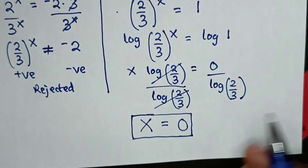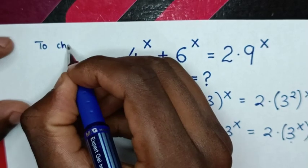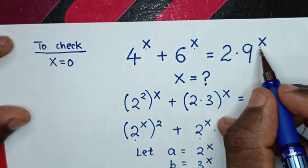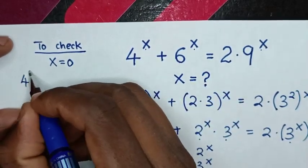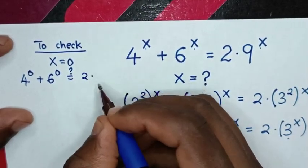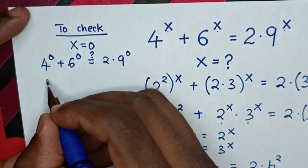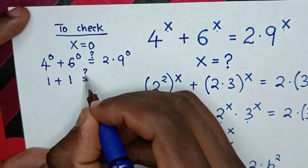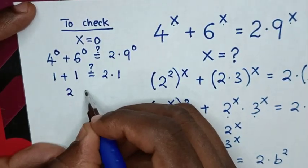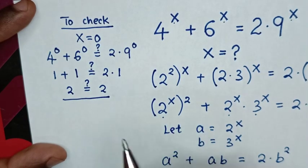To check: substituting x equals 0 into the original equation gives 4 power 0 plus 6 power 0 equals 2 times 9 power 0. This becomes 1 plus 1 equals 2 times 1, so 2 equals 2. The left side and right side are equal, confirming that x equals 0 is correct.